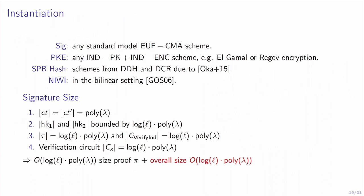We can instantiate this scheme using any number of standard signature and public key encryption schemes. For the SPB hash we have an instantiation from DDH and one from DCR. For the proof we can use the Groth-Ostrovsky-Sahai proof. Regarding size, all components of the SPB hash that we need are of logarithmic size in the ring, and the verification circuit for our statement is also of logarithmic size, so the overall size of our signatures is logarithmic in the number of users in the ring.